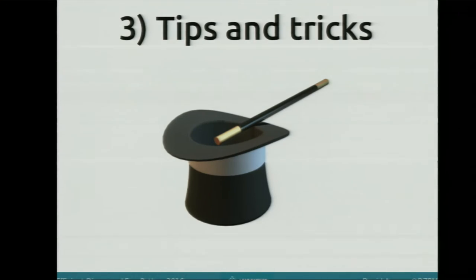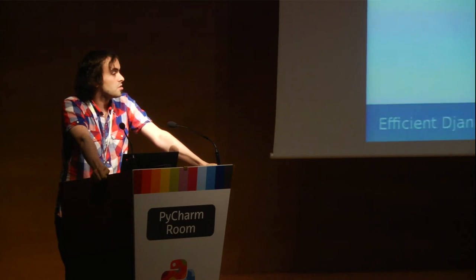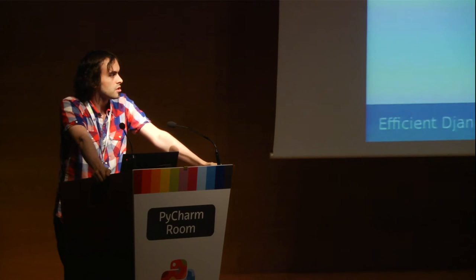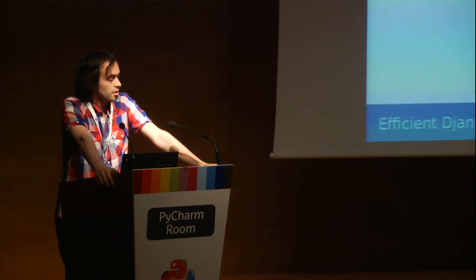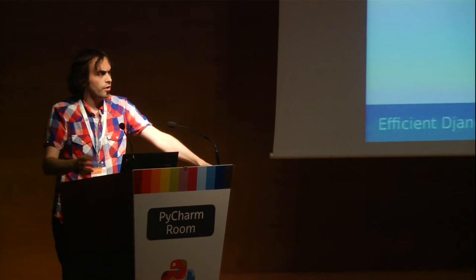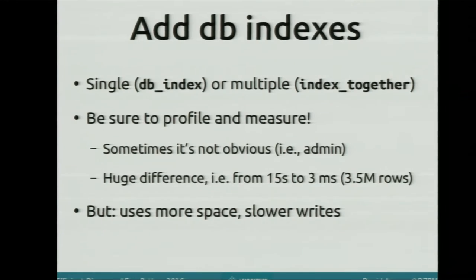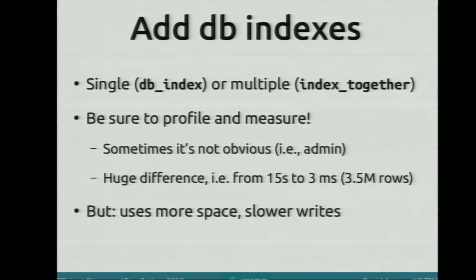Tips and tricks. Now that we know the basic concepts and how to measure and find the bottlenecks, we will see a few best practices and possibilities on how to fix performance bottlenecks. First, the most important: databases. Databases are usually slow because the indexes are wrong. An index in a database makes your queries faster, but you need to have the right indexes. Databases are not as intelligent as they seem — you need to be very specific on what you want to index.